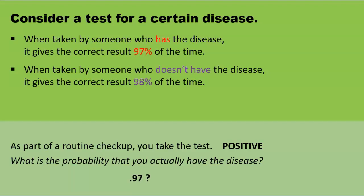The most common response is 0.97. This, however, is incorrect. We can see why it's incorrect by translating some of the statements on the screen into conditional probabilities. Let's go back to our first bullet point. Translated into our new notation, it looks like this. The probability that the test is positive, given that the person taking it has the disease, is 0.97.